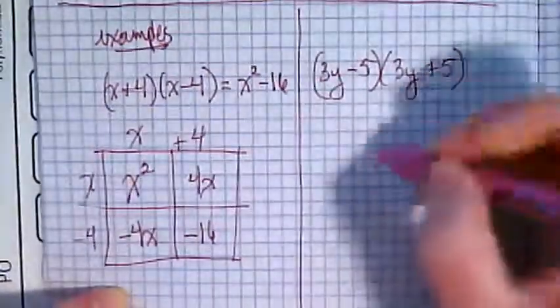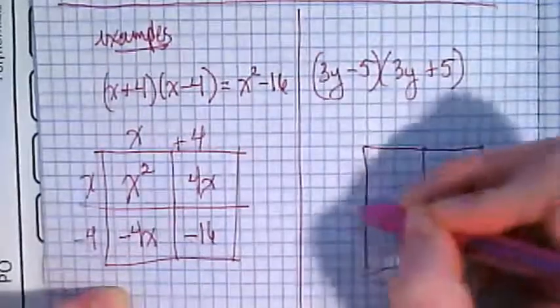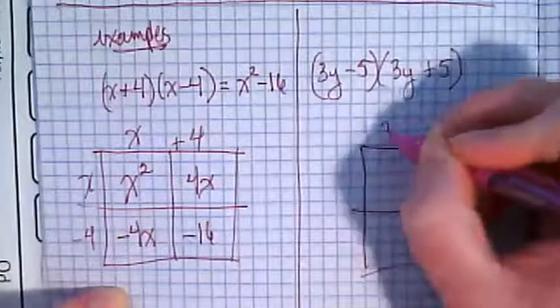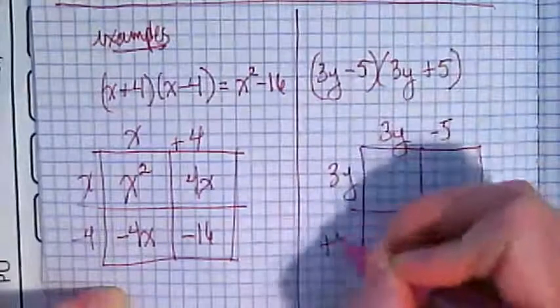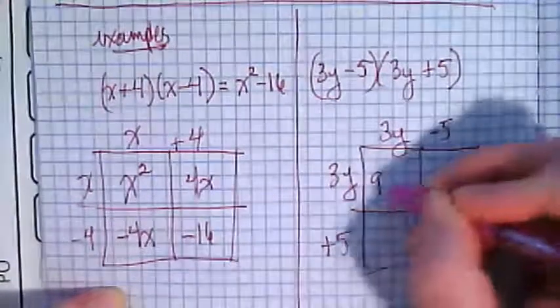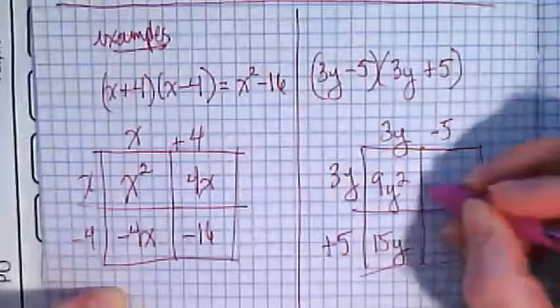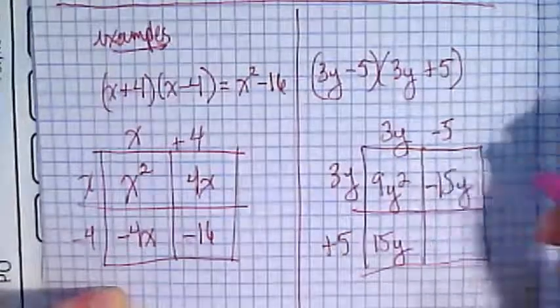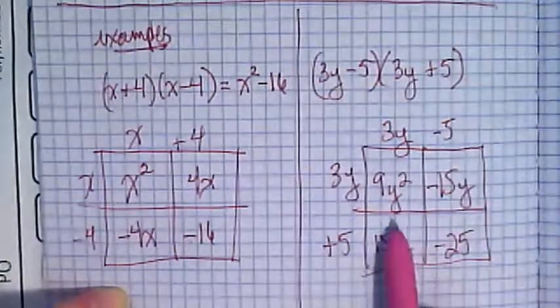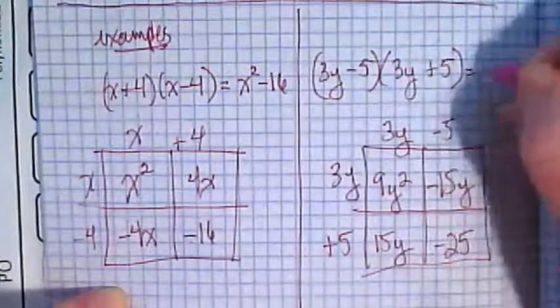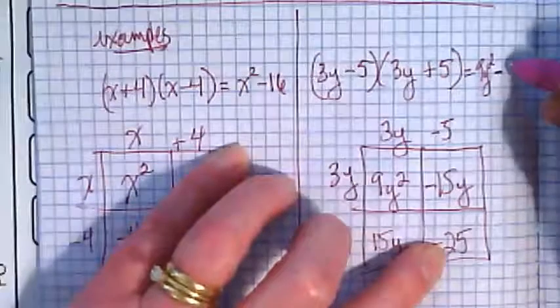Let's try one more example and see if we see that same pattern happening. (3y - 5)(3y + 5). I get 9y², 15y, negative 15y, negative 25. So we end up with 9y² - 25.